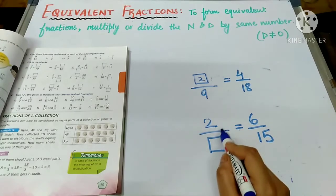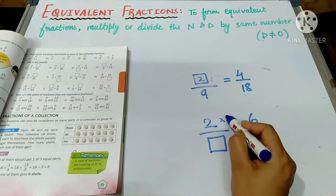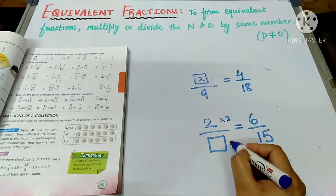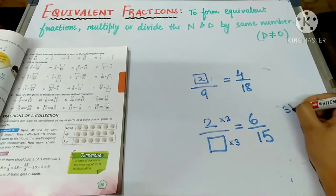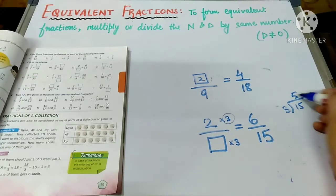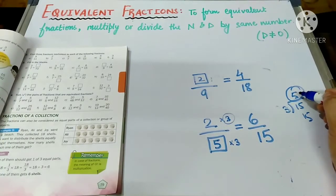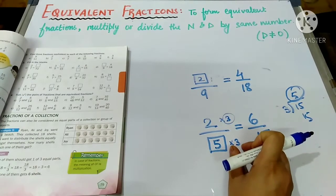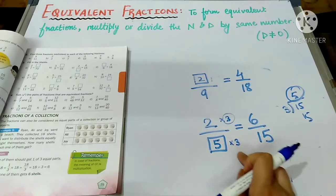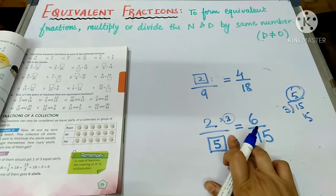Another one: two over box equals six upon fifteen. Two ki table mein six ka baata hai — two threes are six — so the box in the denominator was also multiplied by three. Ab three ki table mein fifteen ka baata hai: three fives are fifteen. Aapko nahi pata, so you can just divide. The answer is five.